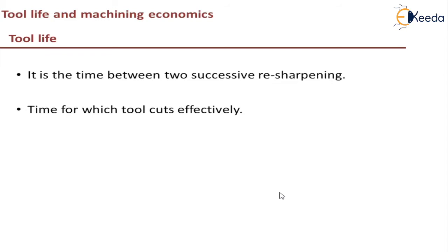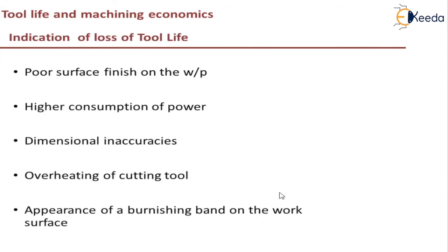After this point, the tool may not be effective and it may have other adverse effects, which we will be discussing in the next slide. There should be some criteria for tool life — some indication that tool wear has occurred and that tool life has ended. The first one is poor surface finish on the workpiece. There will be a very rough or very poor surface finish obtained on the workpiece, and that is one indication of the end of tool life.